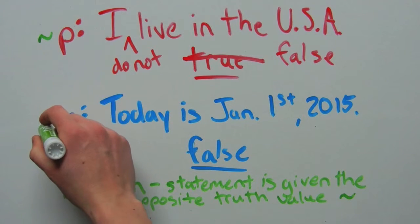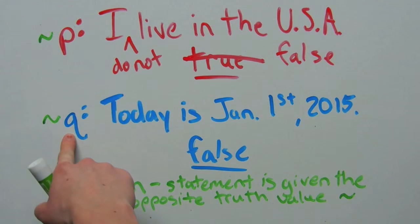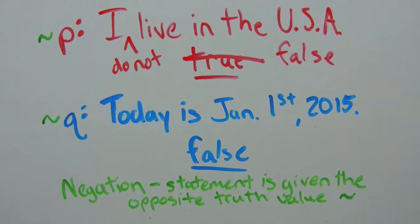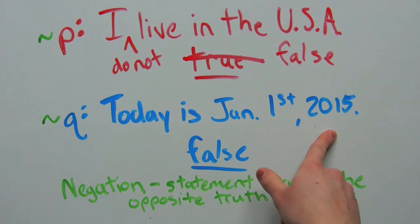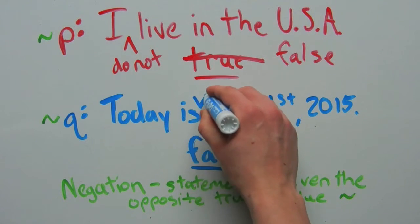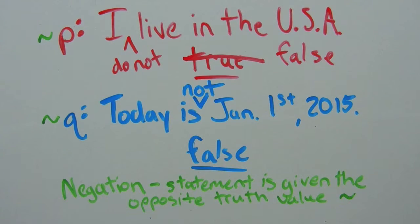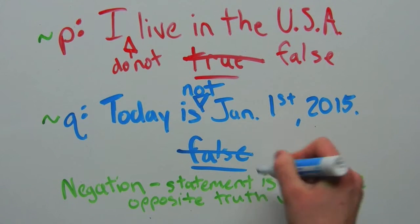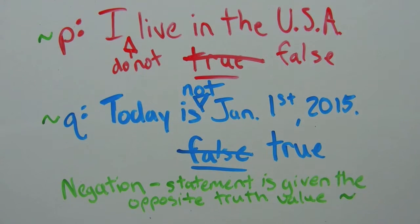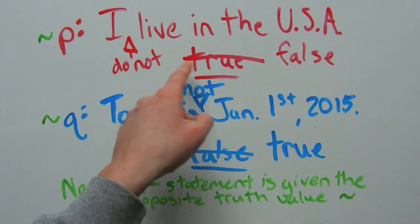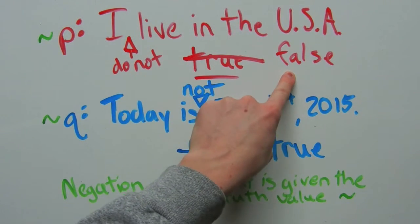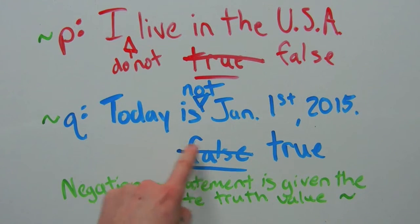We're also going to go ahead and negate Q. This is read 'not Q.' So now, 'Today is January 1st, 2015' becomes 'Today is not January 1st, 2015.' And that is correct — today is not January 1st, 2015. So this goes from false to true. You can see that a negation switches the truth value. Our first statement P went from true to false, and our second statement Q went from false to true.